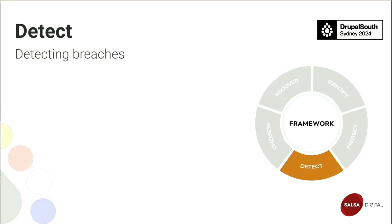How can we detect a breach or someone attempting to abuse our cloud infrastructure? At the infrastructure level, if your cloud usage is fairly stable, cost and usage alerts are a useful indicator of a breach — especially if attackers try to spin up a cryptocurrency miner, which would really spike your cloud bill. Tools like Amazon GuardDuty can also proactively monitor your instances and outgoing traffic to identify breaches or potential breaches.